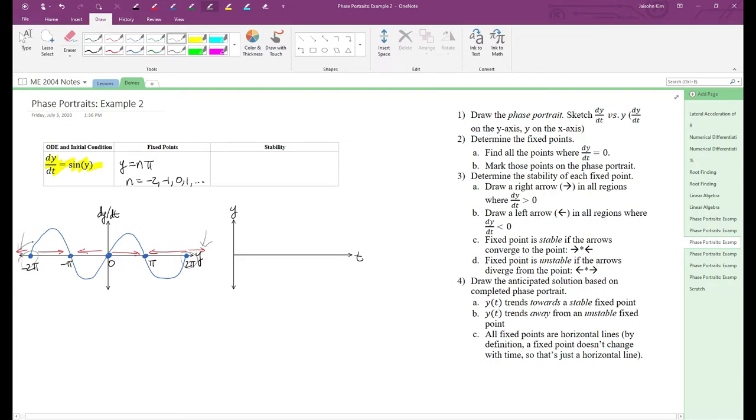From the plot, we can see that stable fixed points occur at odd integer multiples of π, and unstable fixed points occur at even integer multiples of π.